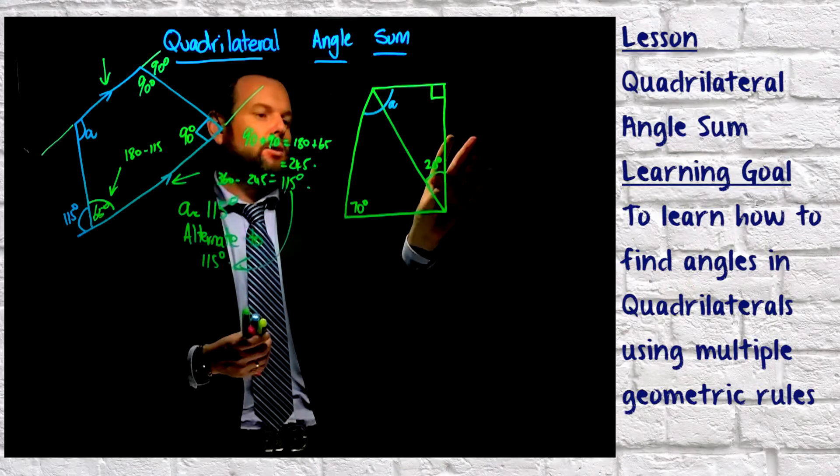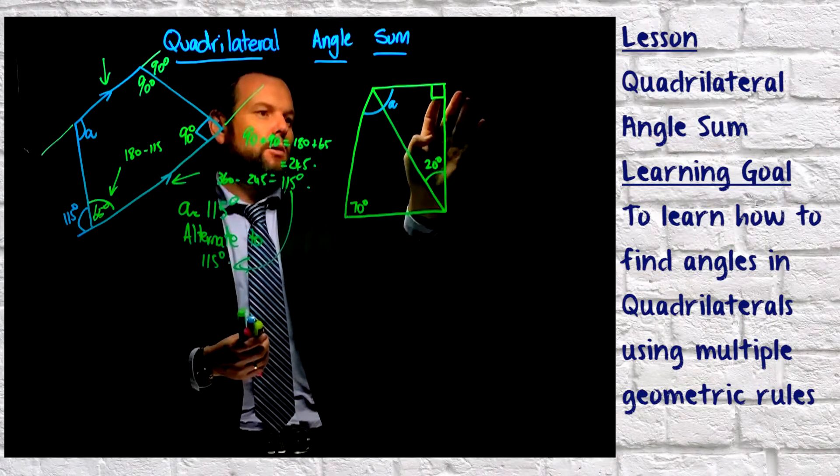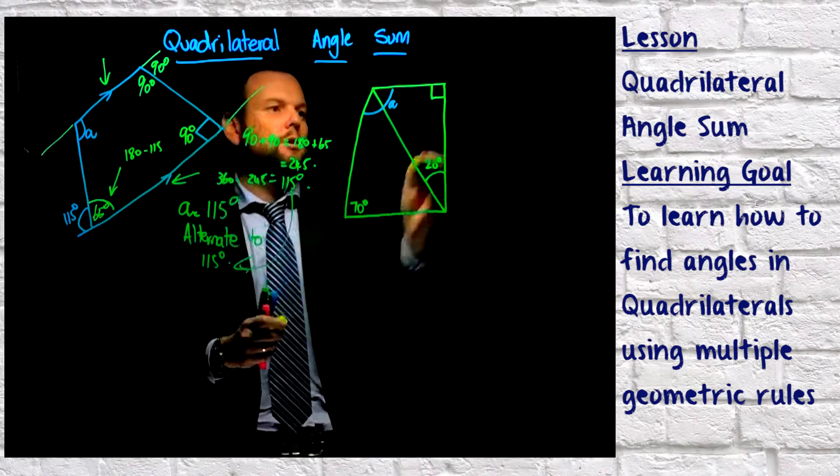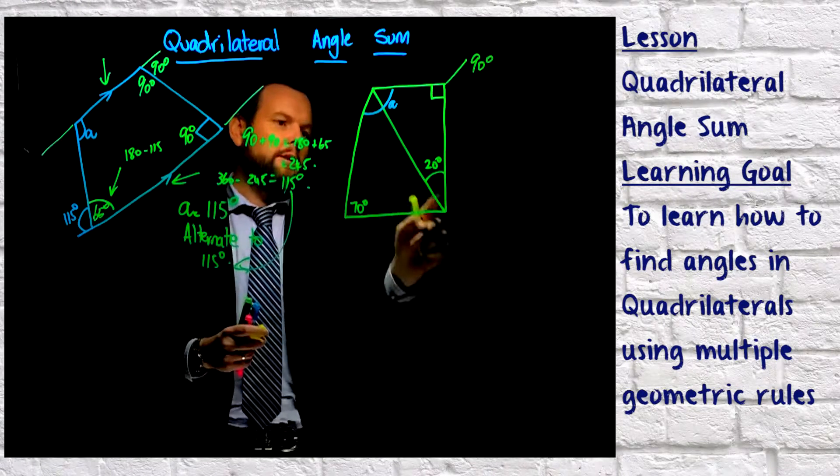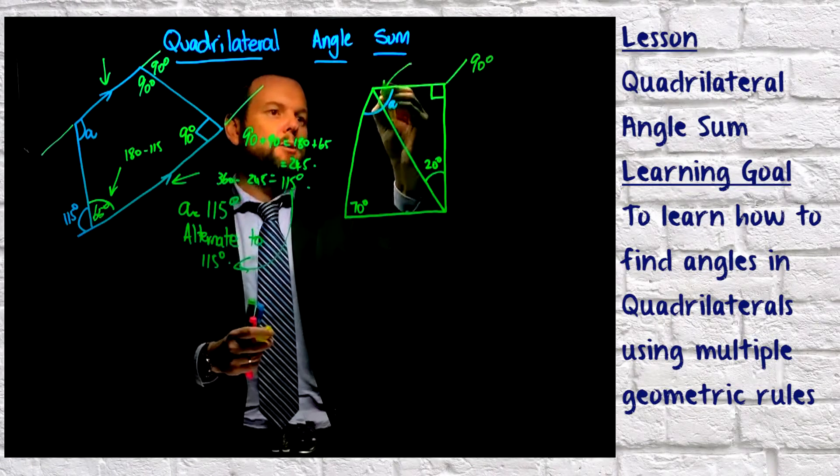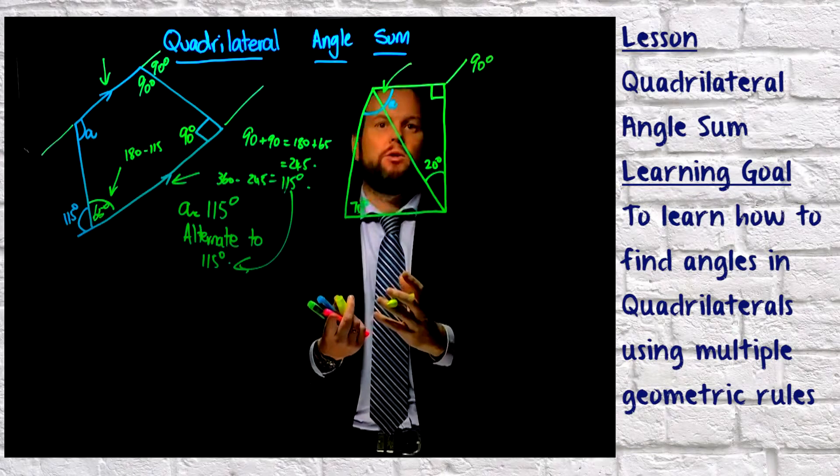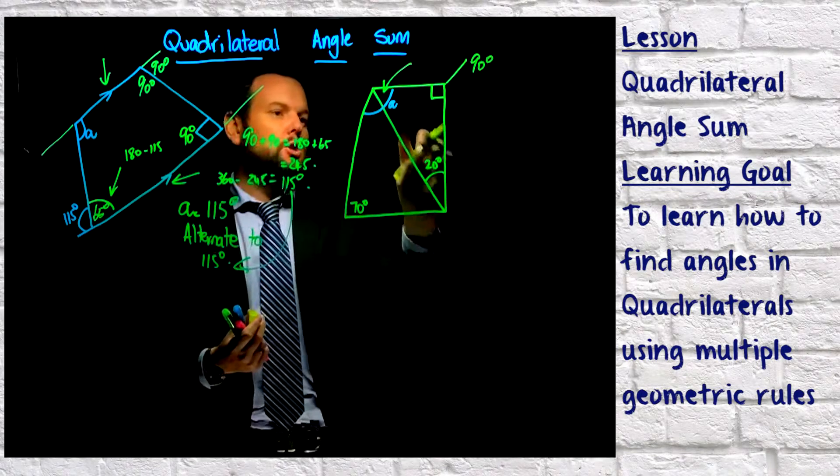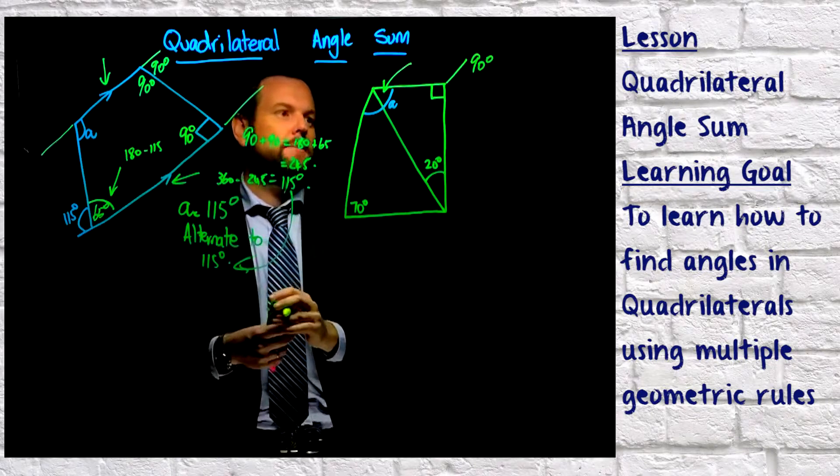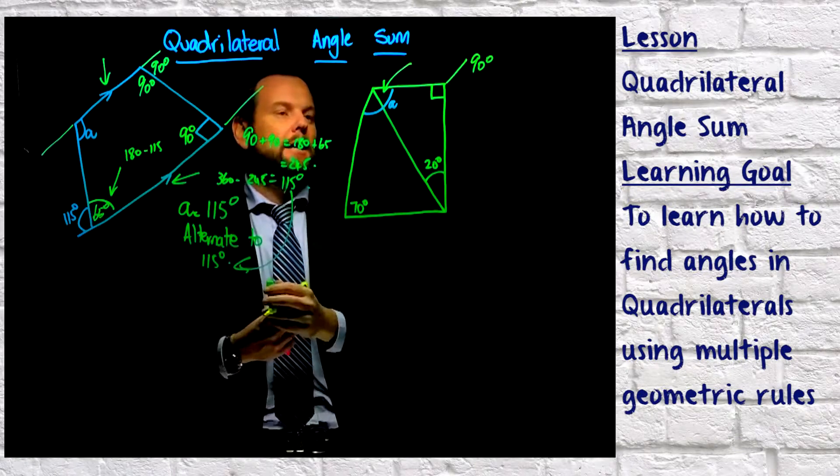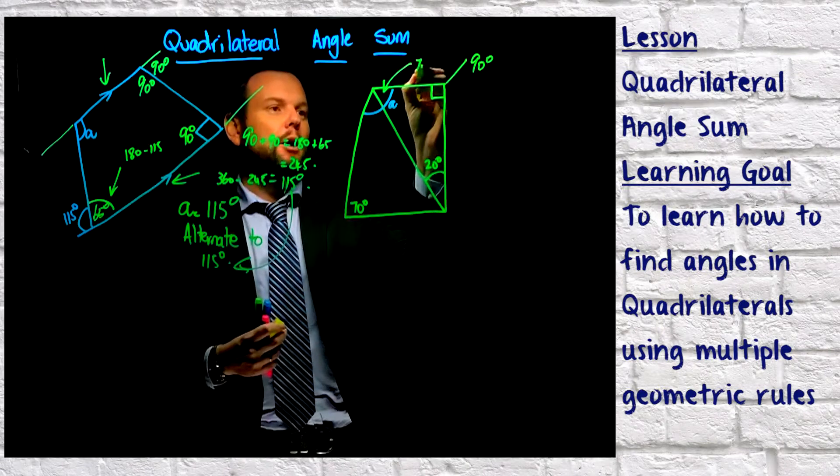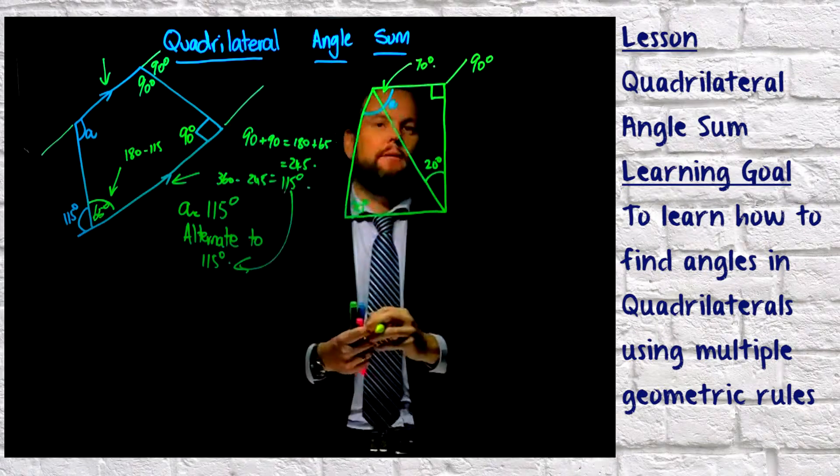So firstly, if I have a look at this here, I can find the value of this angle. I know that that is 90 degrees. I know that that's 20, and I know that this is a triangle. So that means I'm going to be able to find half of our angle straight away, because in a triangle, we have 180 degrees. So if I add those two together, I get 110, and then if I take that away from 180, I'm left with 70.